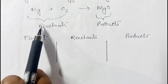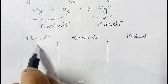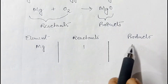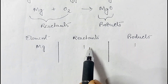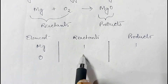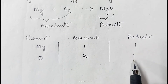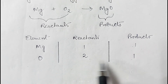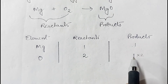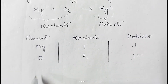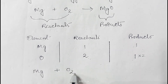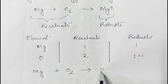Counting the atoms: for magnesium, reactant side has one atom and product side also has one — both are same. For oxygen, reactant side has two but product side has only one. To balance oxygen, we multiply the product side by two. So we can write the reaction as: Mg + O₂ → 2MgO.